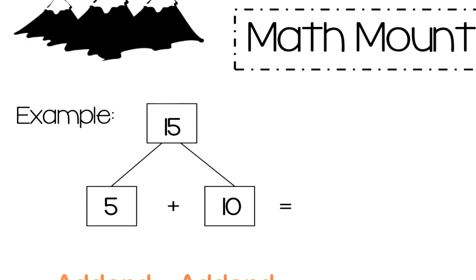The two numbers on the bottom are the addends, and the top of the mountain is the total.